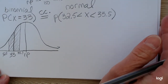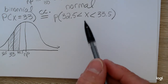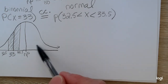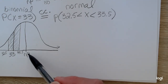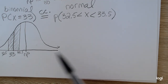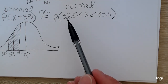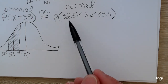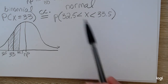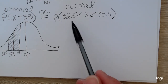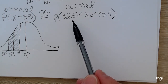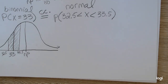If you wanted to actually find that normal probability, you would first need to know what n times p are, so you could find mu and sigma. Then if you wanted to use the standard normal table, you would have to standardize both of those endpoints. I prefer to use technology at this point, and my next examples will be doing exactly that.